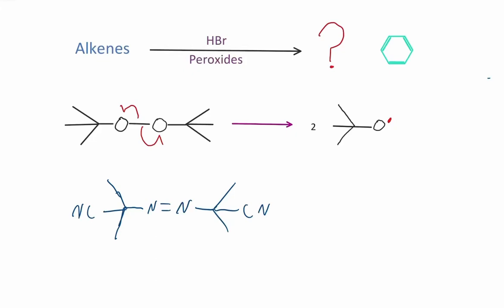Today, we're going to do some problems involving the anti-Markovnikov addition of hydrogen bromide to alkenes, as well as free radical chemistry. We'll spend a lot of time talking about the mechanism because these problems can be very mechanism dependent, but we'll do some practice problems as well.